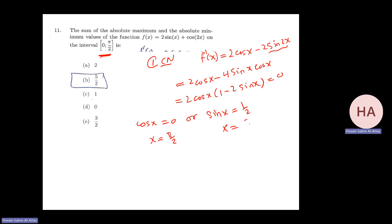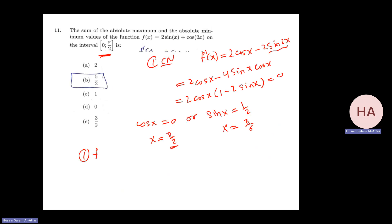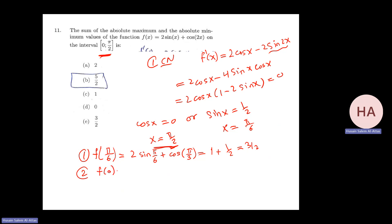So x equals pi over 2 and x equals pi over 6. Both are in the interval. f(pi/6) equals 2 sine(pi/6) plus cosine(pi/3), which is 2 times 1/2 plus 1/2, giving 1 plus 1/2 equals 3/2.